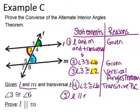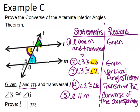L is parallel to M because of the converse of the corresponding angles postulate, which says that two lines are parallel if corresponding angles are congruent. So here we've proved the converse of the alternate interior angles theorem. We've proved that if two alternate interior angles are congruent, then lines have to be parallel.